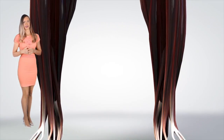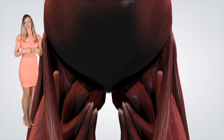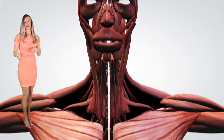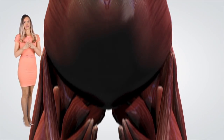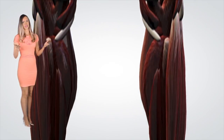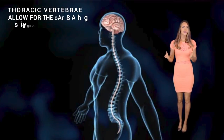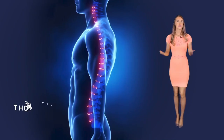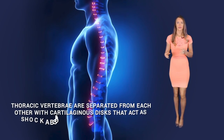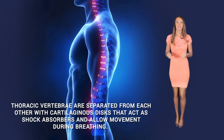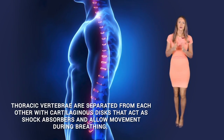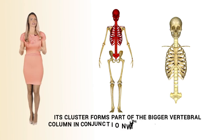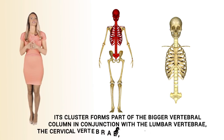Ribs provide a surface area for attachments of these muscles, with a major tendon that originates from the sternum and runs all the way down to the pelvic bone, providing an attachment site for the rectus abdominis muscle. Thoracic vertebrae allow for the passage of the spinal cord, which is heavily laden with nerves connecting to the central nervous system. Thoracic vertebrae are separated from each other by cartilaginous discs that act as shock absorbers and allow movement during breathing. They form part of the bigger vertebral column in conjunction with the lumbar vertebrae, the cervical vertebrae, sacral vertebrae, and the coccyx.